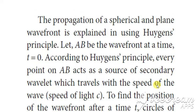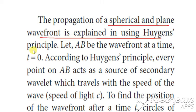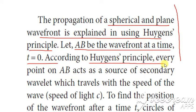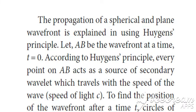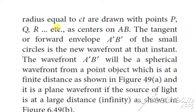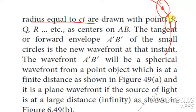This is the statement of Huygens' principle. The propagation of spherical and plane wavefront is explained in this principle. Let AB be the plane wavefront at time t equal to 0. According to Huygens' principle, every point on AB acts as a source of secondary wavelets and spreads with the speed of the wave. To find the position of the wavelets, we use circles of radius equal to ct.